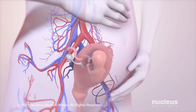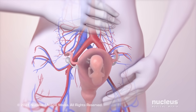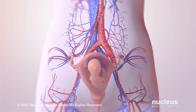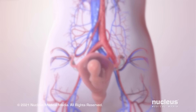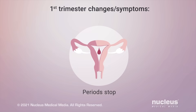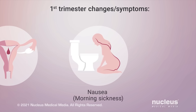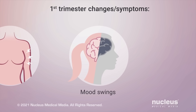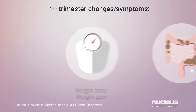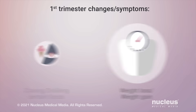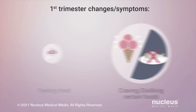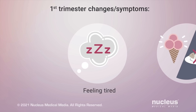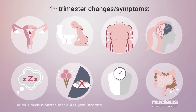Your body experiences many changes during the first trimester. This is due to changing levels of chemicals, called hormones, circulating through your body. The most common first sign of pregnancy is that your menstrual periods have stopped. You may have other symptoms as well. You may have only a few of these symptoms, or none at all.